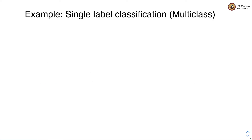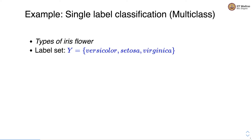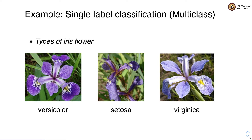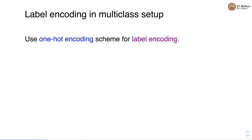Another example of single-label classification with multiple classes is the types of iris flower. The label set has three types: versicolor, setosa, and virginica. We assign exactly one label from this set to each flower. These are iris flowers shown on your screen, and we assign one label to each of them.